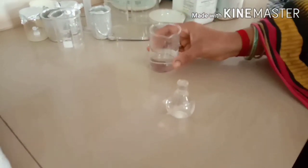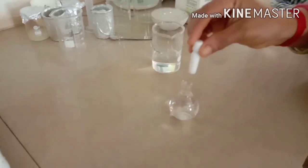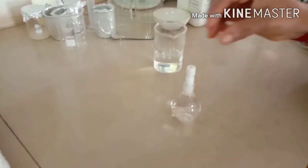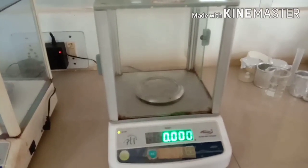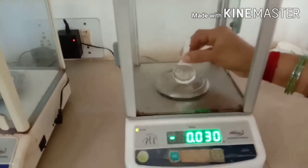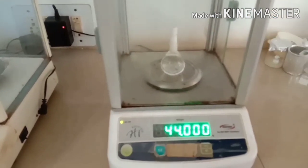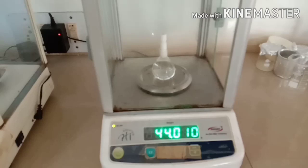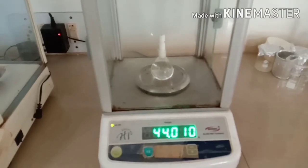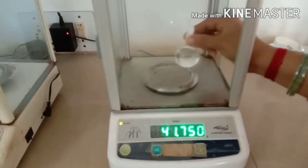That is W2 minus W1 divided by W3 minus W1, into density of water. That will give you the density of unknown liquid. So this is the weight of unknown liquid with specific gravity bottle. Similarly, next substitute this in the formula.